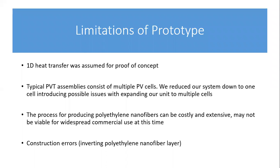Some limitations of the prototype include assuming 1D heat transfer for our proof of concept, and that a typical PVT assembly consists of multiple PV cells — reducing to one cell introduces possible issues with scaling to multiple cells. The process for producing polyethylene nanofibers can be costly and expensive, which may not make it a viable option for widespread commercial use at this time. There is also the risk of construction errors that could occur by inverting the polyethylene nanofiber layer.